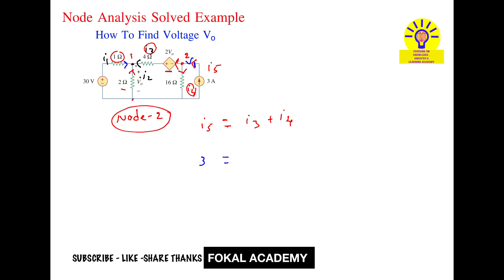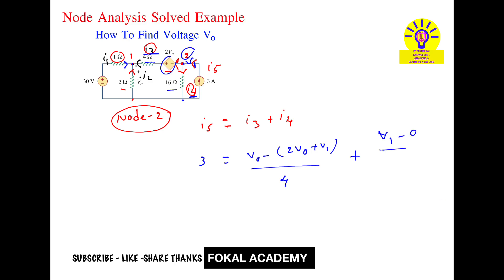i3 we already know — that is V0 minus 2V0 minus V1 divided by 4 ohms. Next, i4 is in this branch: the voltage V1 across 16 ohms gives i4 equals V1 divided by 16 ohms. By simplifying this we get 5V1 plus 4V0 equals 48. Let this be Equation 2.